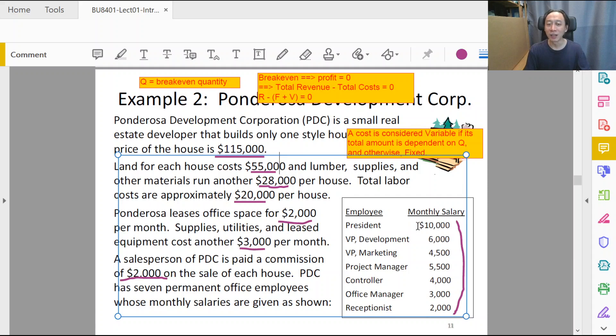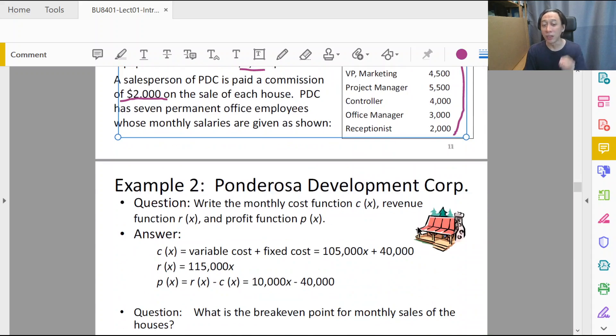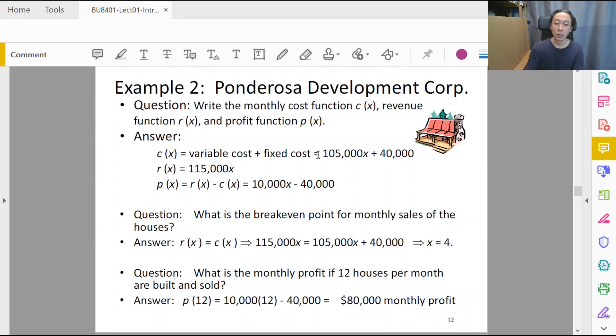So after classifying all the costs correctly, then we are able to add up the total variable costs with the right coefficient, then multiply by x, the quantity of houses that we must sell, plus fixed costs which is the sum of all the quantities that do not depend on x.